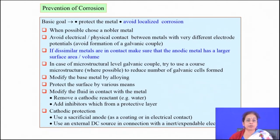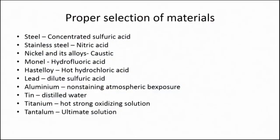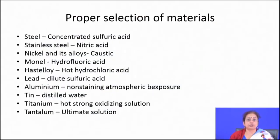For liquid metal corrosion, you can apply a coating, change to a proper material for that liquid metal environment, or apply a very thin layer of coating that does not participate in the liquid metal embrittlement process, thereby protecting the underlying substrate. These are the guidelines for preventing or minimizing the probability of different types of corrosion.